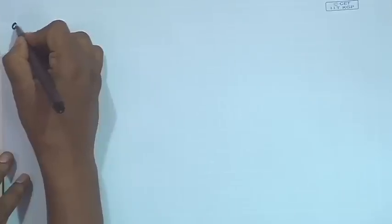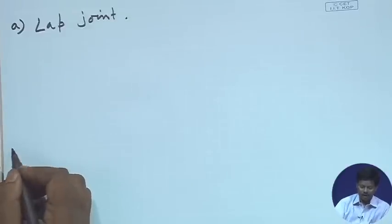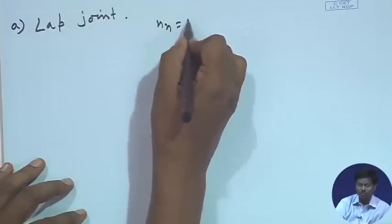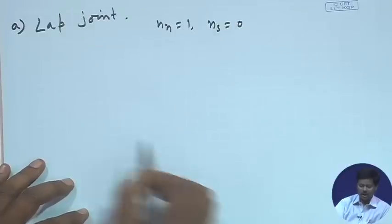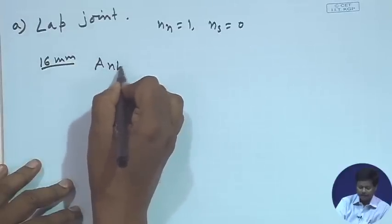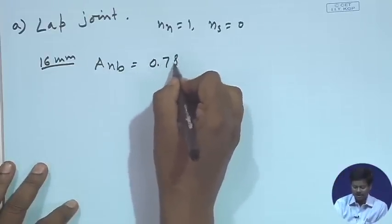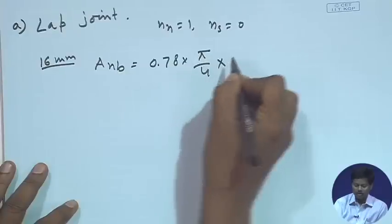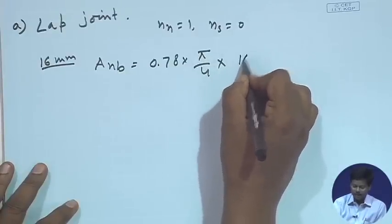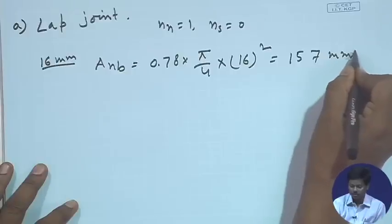For the first case — lap joint — we assume the shear plane is in the threads. So n_n = 1 and n_s = 0. For 16 mm bolt diameter, the net shear area at the thread, A_nb = 0.78 × (π/4) × d² = 0.78 × (π/4) × 16² = 157 mm².